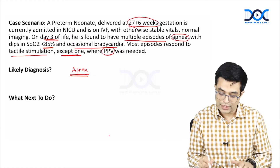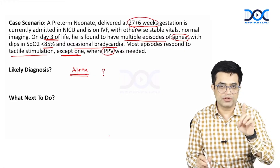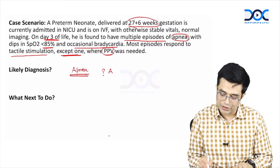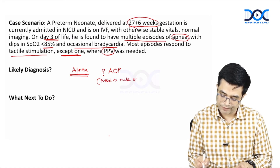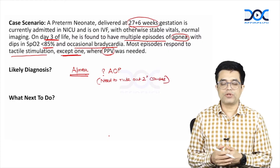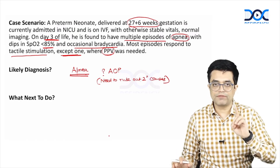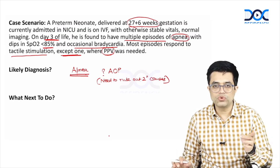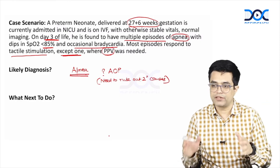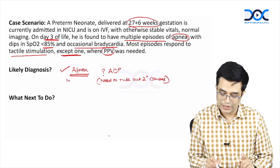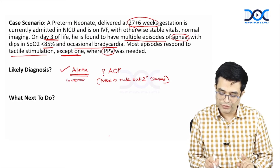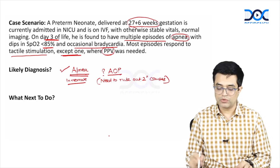So, the likely diagnosis? Possibly apnea of prematurity — but we don't know until we have ruled out secondary causes. If it was an MCQ, the most likely diagnosis would be apnea of prematurity. But in clinical settings — in wards, on rounds, or in a short spotter case — your diagnosis will be apnea in the newborn. You will write apnea in the unit, with the likely etiology being apnea of prematurity. At the same time, you need to rule out the secondary causes.